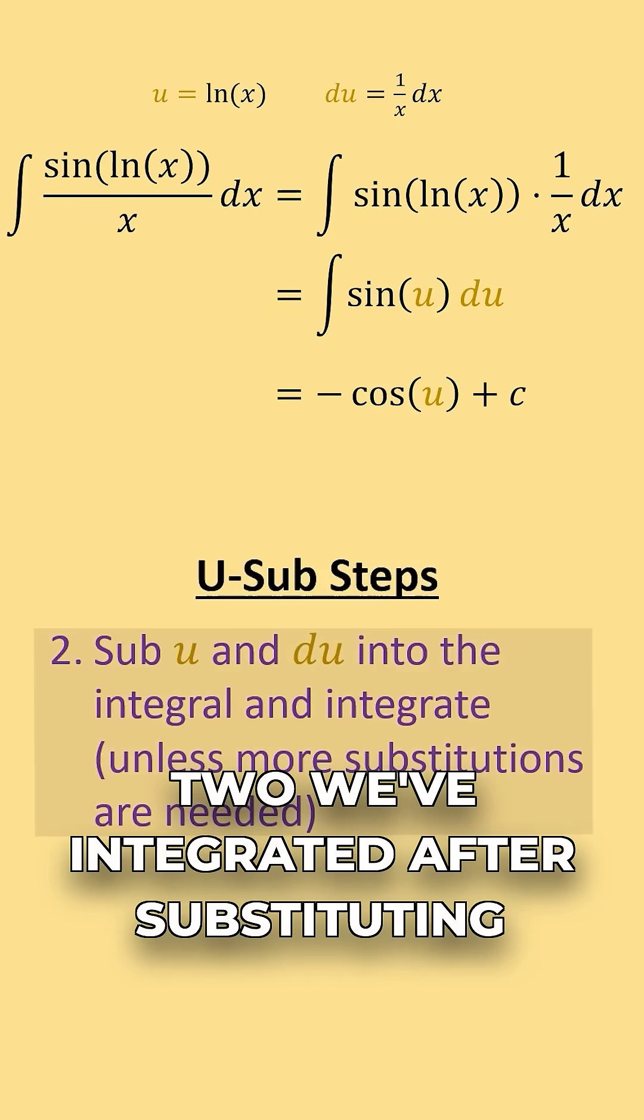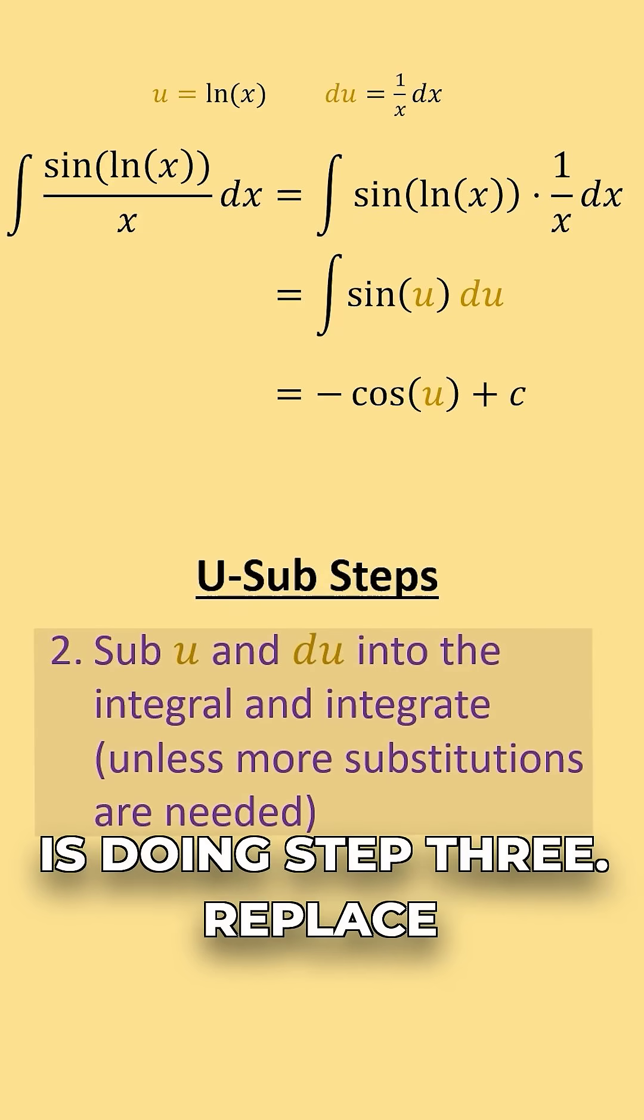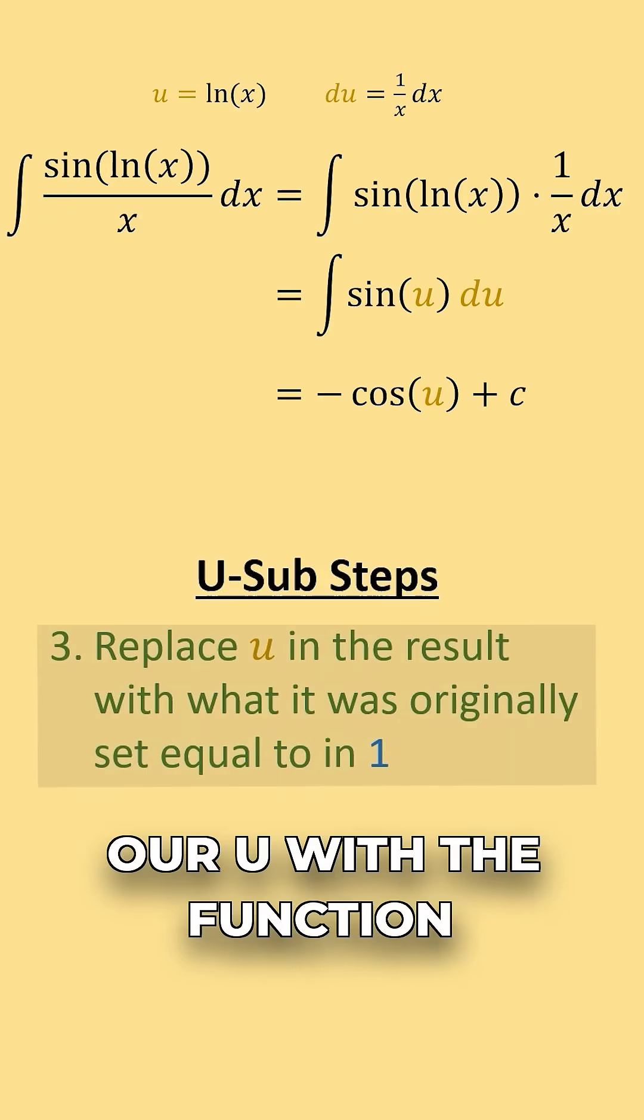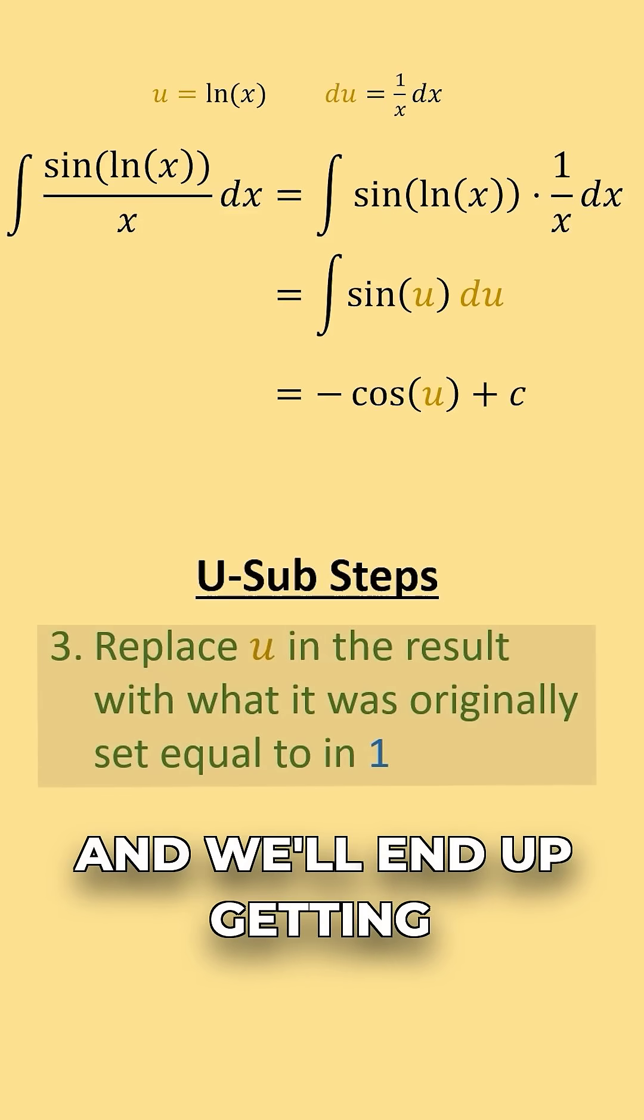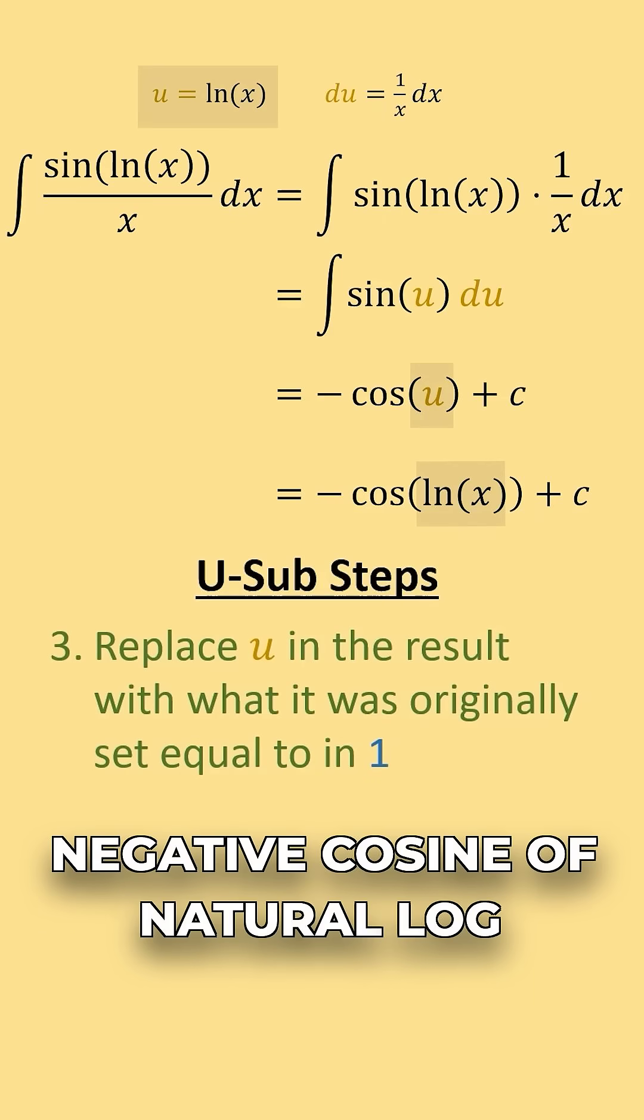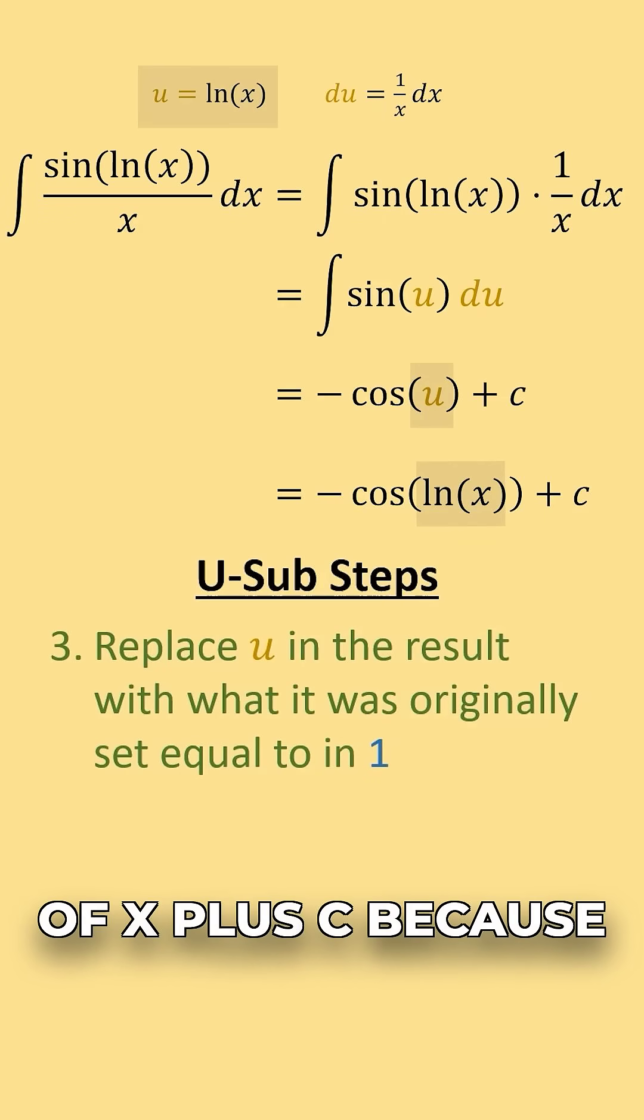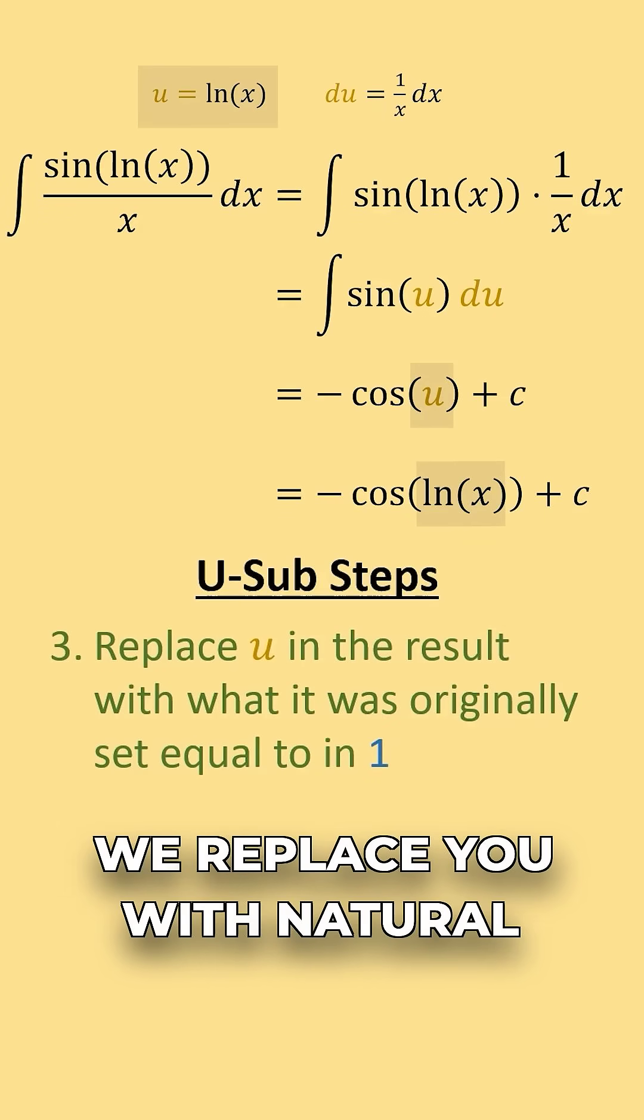We've integrated after substituting u and du in. And so all we have left is doing step three, replace our u with the function of x that we originally set it equal to. And so we'll end up getting negative cosine of natural log of x plus c, because we replace u with natural log of x.